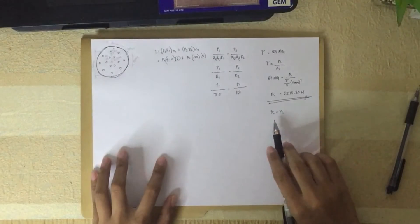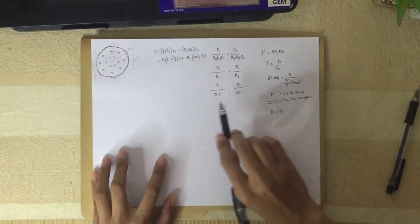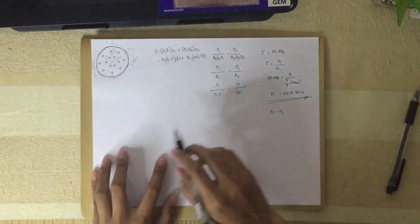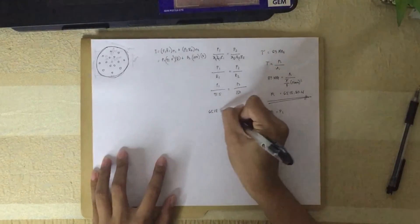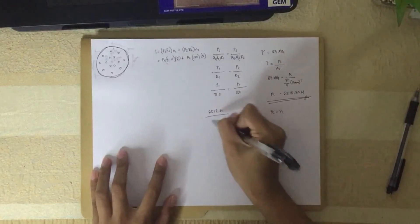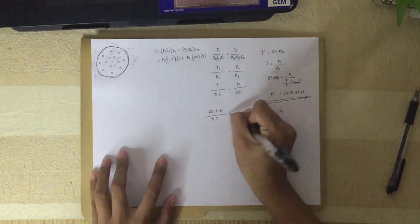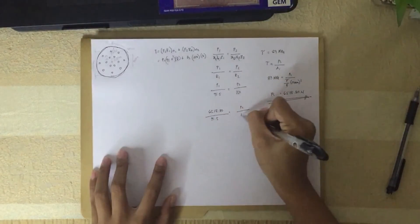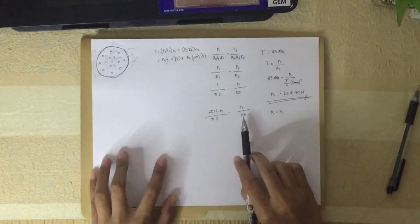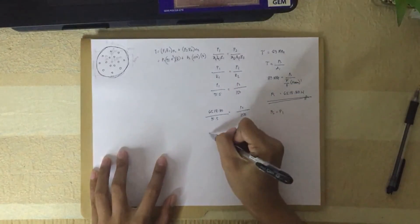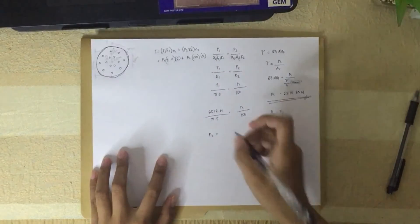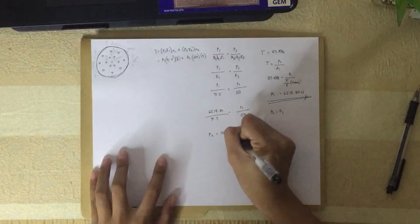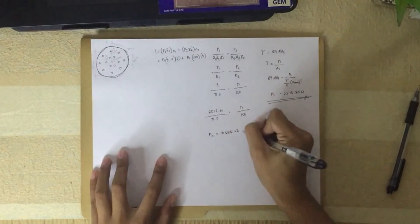Now we have the value of P1. Going back to the general formula to substitute P1, which is P1 equals 6518.80 over 91.5 equals P2 over 150. We can now find P2, which equals 10686.56 Newton.